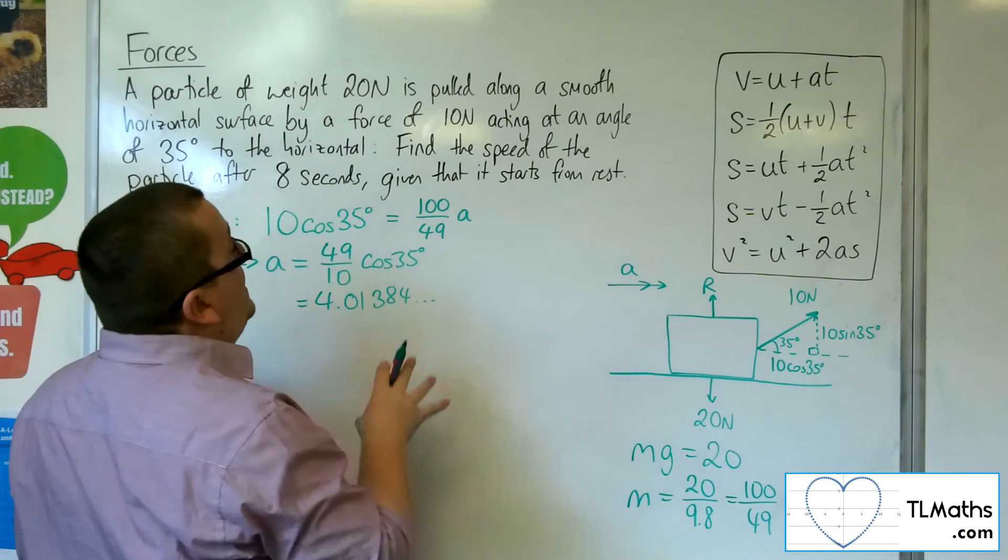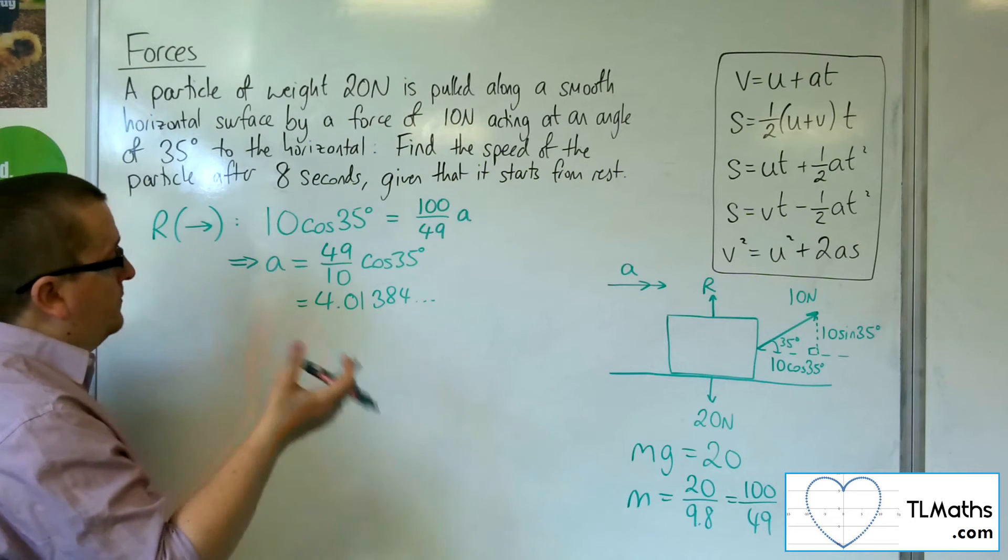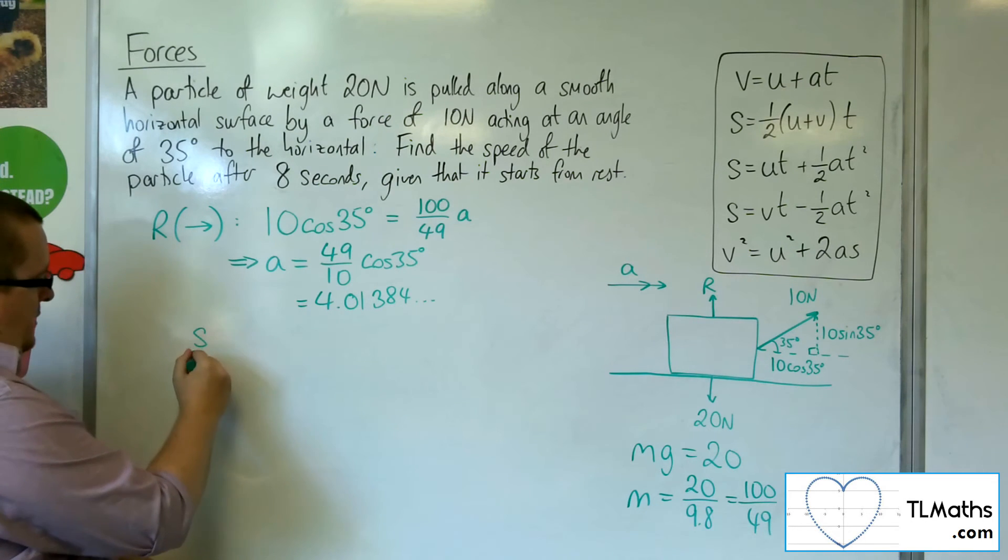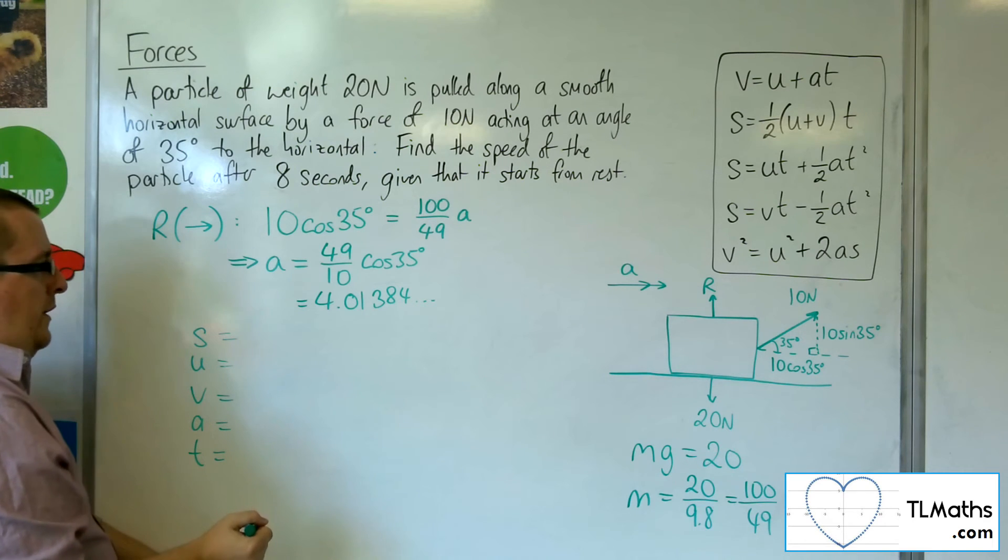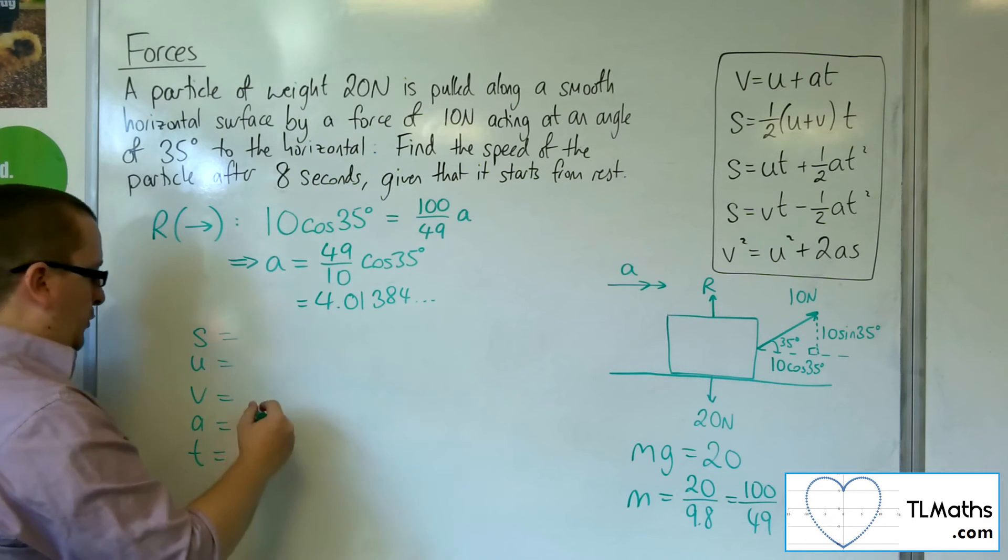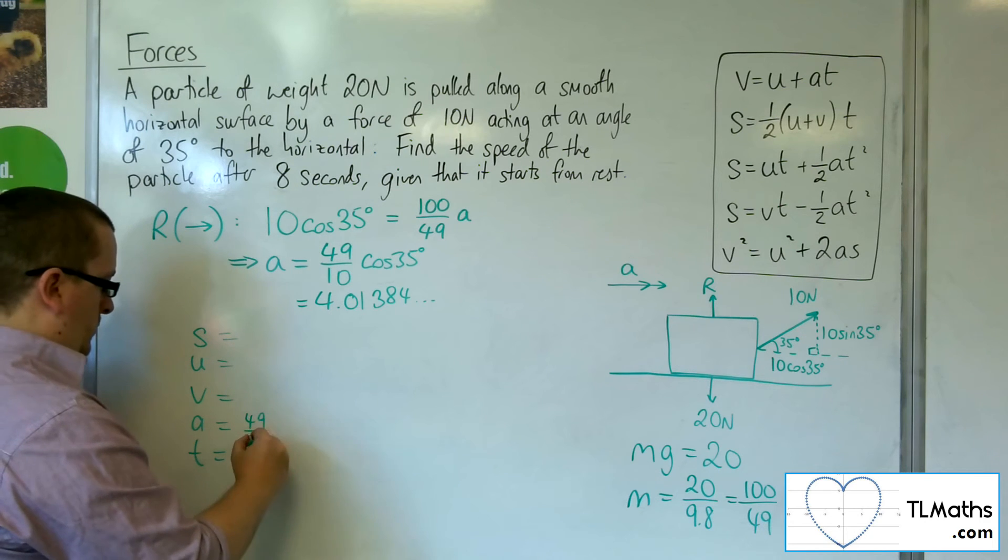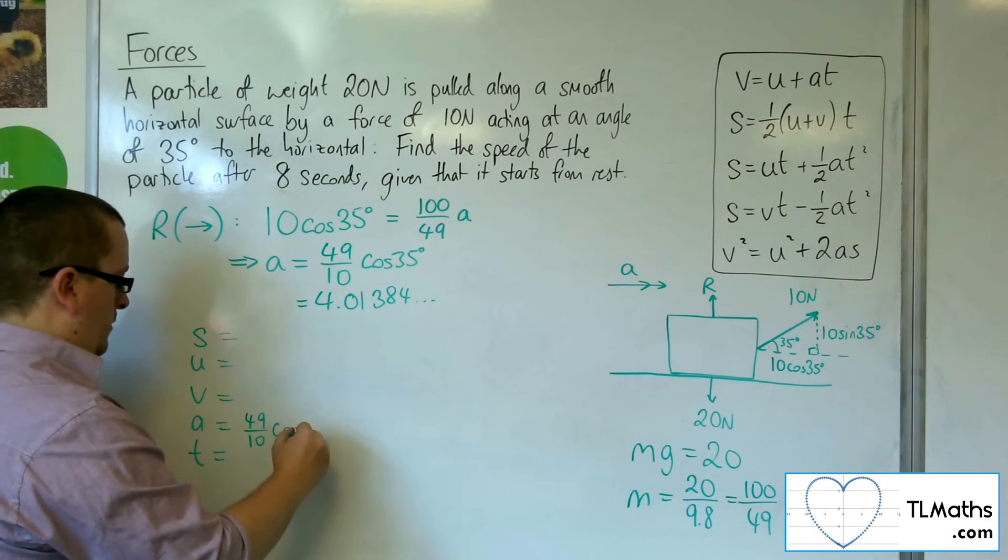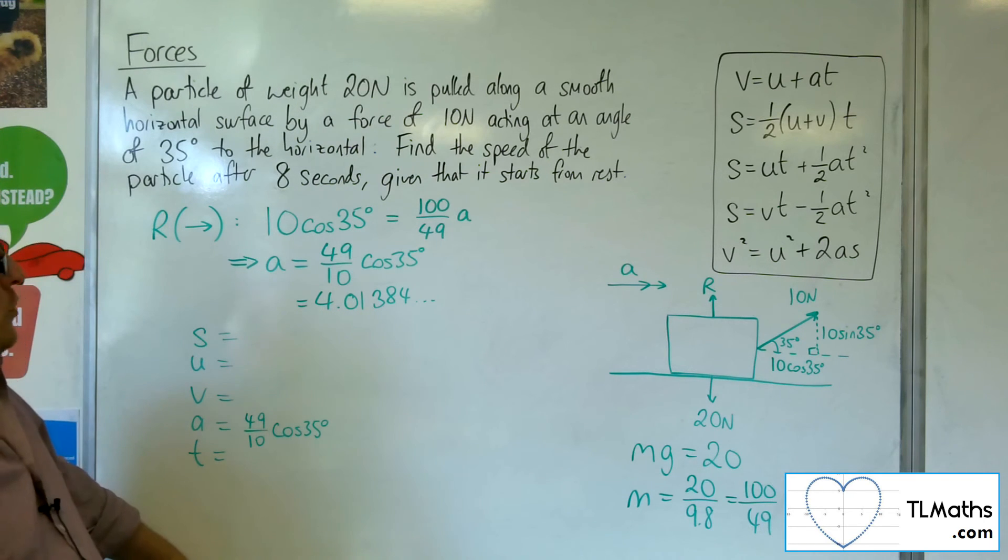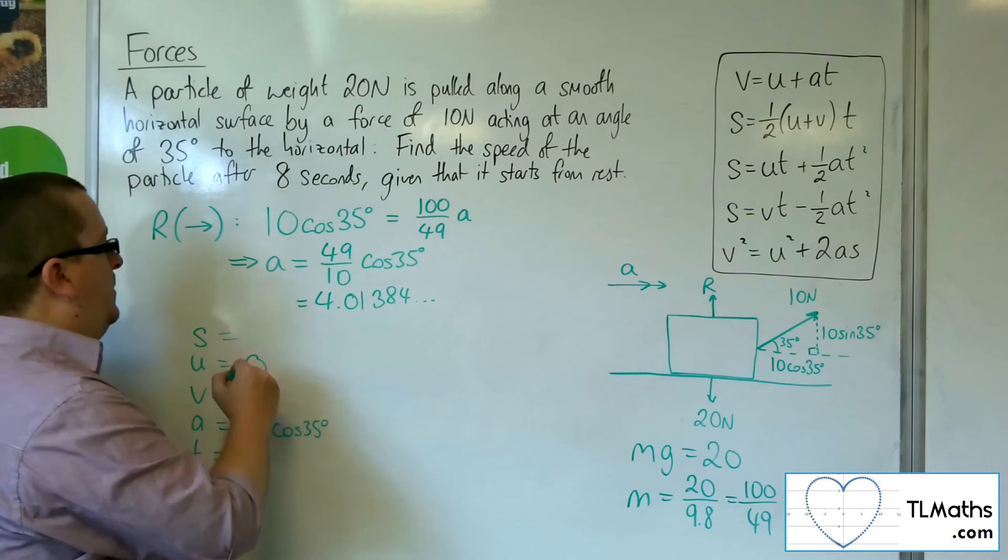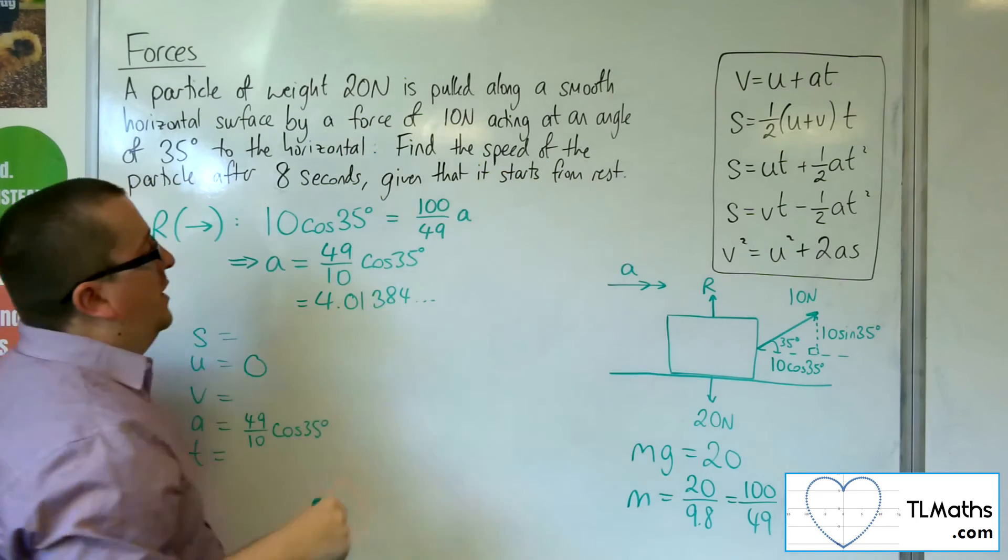Now, we're ready to use SUVAT. So, we know the acceleration is this 49 tenths cosine 35 degrees. We know the initial velocity is 0, because the question says that we're starting from rest. We want to find the speed of the particle after 8 seconds.